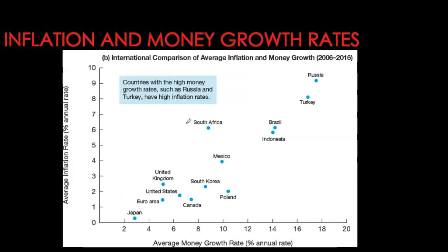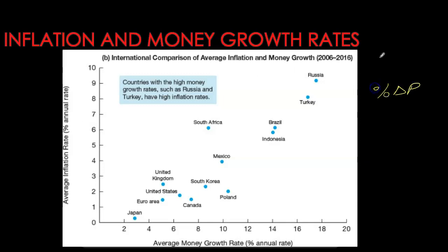If we do a cross-country comparison, we see a similar trend. We have the average money growth rate from 2006 to 2016 and the average inflation rate over the same period. Economies which had very high money growth rates also ended up with very high inflation. Note that this data is averaging over a 10-year period, so it's long-term data. We can easily conclude that we cannot have high sustained inflation without high money growth rates. So money growth rate is the driving engine behind inflation, at least in the long run. This gives us a very strong policy implication for monetary policy makers.